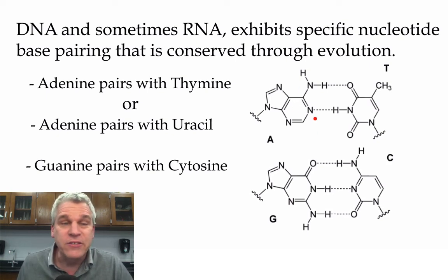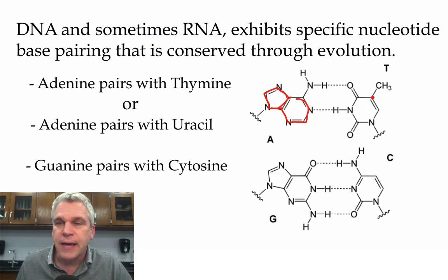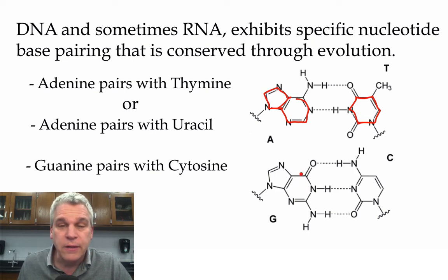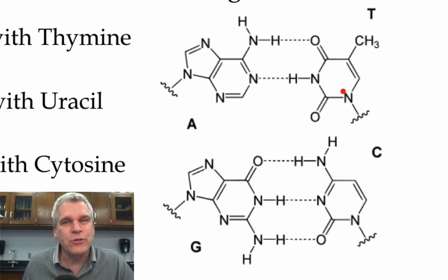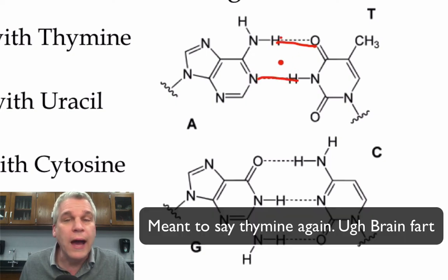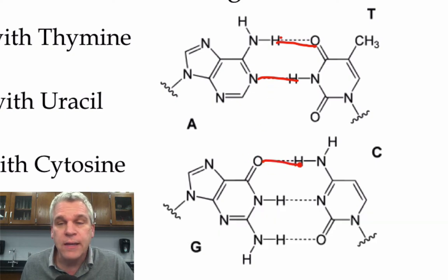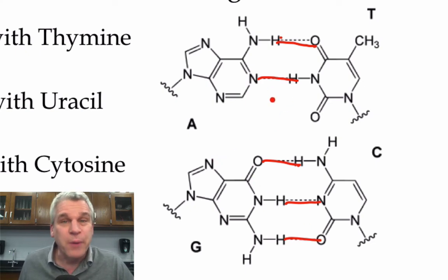Now, let's take a look at why these always pair with one another. If we take a look at the adenine molecule here, adenine is what's called a double-ring structure. Cytosine is a single-ring structure. Guanine has a double ring, and cytosine has a single ring. But if you take a close look at how these molecules actually attach to one another, notice that adenine and thymine form two hydrogen bonds, whereas cytosine and guanine end up forming three hydrogen bonds, which is why you can only get A's pairing with T's, or U's, and C's pairing with G's.